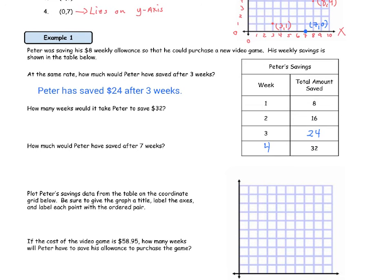The next question says, how many weeks would it take Peter to save $32? Well, here it is $32. If we move towards the left, you can see that it takes four weeks for Peter to save $32.